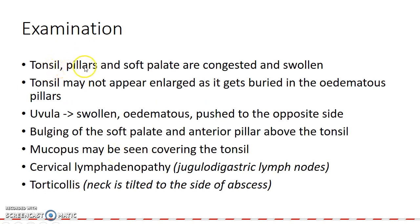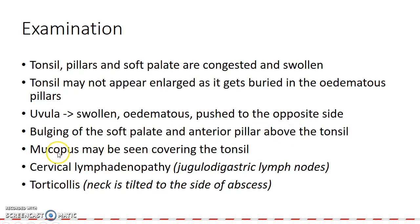On examination, the tonsil, pillars, and soft palate are congested and swollen. The tonsil may not appear enlarged as it gets buried in the edematous pillars. The uvula appears swollen and edematous, and is pushed to the opposite side. Bulging of the soft palate and anterior pillar above the tonsil can be seen. Mucopus may be seen covering the tonsil. There can be cervical lymphadenopathy due to involvement of the jugulodigastric lymph nodes, and torticollis, i.e. the neck is tilted to the side of the abscess.